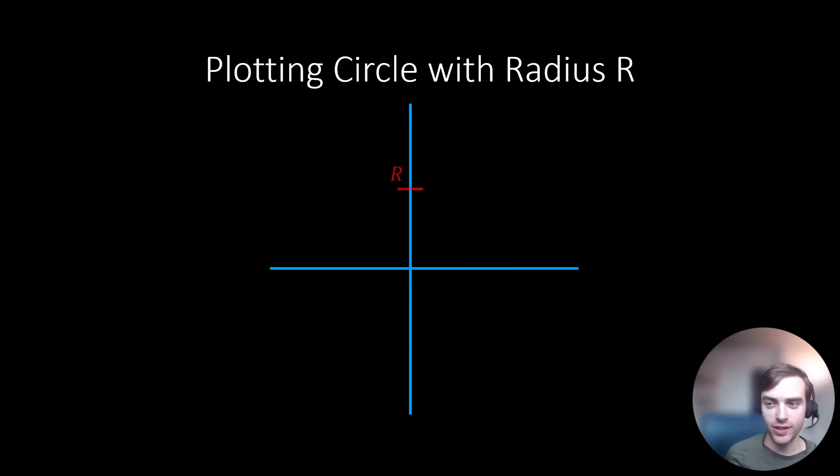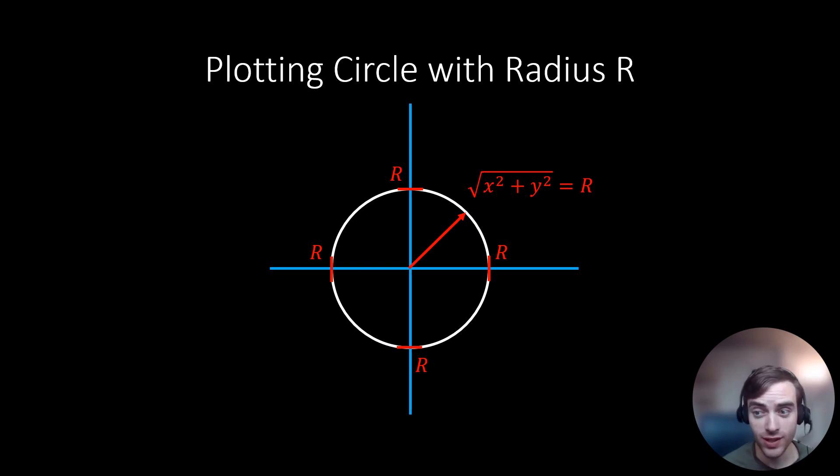By constructing a circle with radius r in the x-y plane centered at the origin. And the equation for this is the square root of x squared plus y squared is equal to r. In other words, this means that our circle consists of the set of all points in which the distance away from the origin is equal to r.